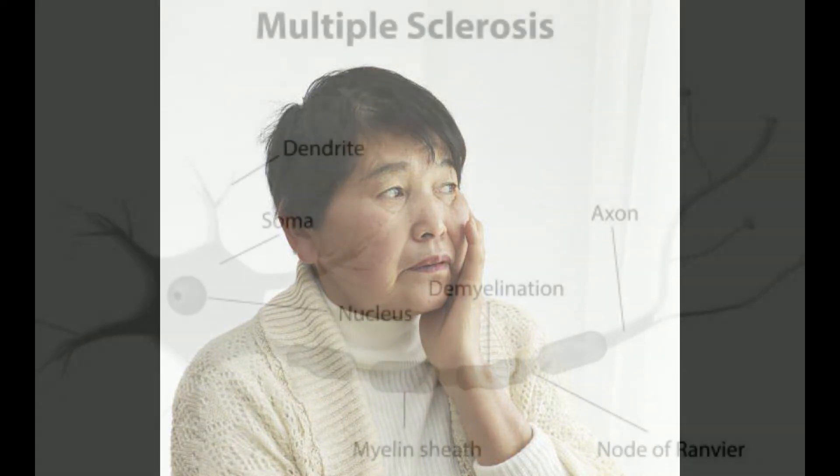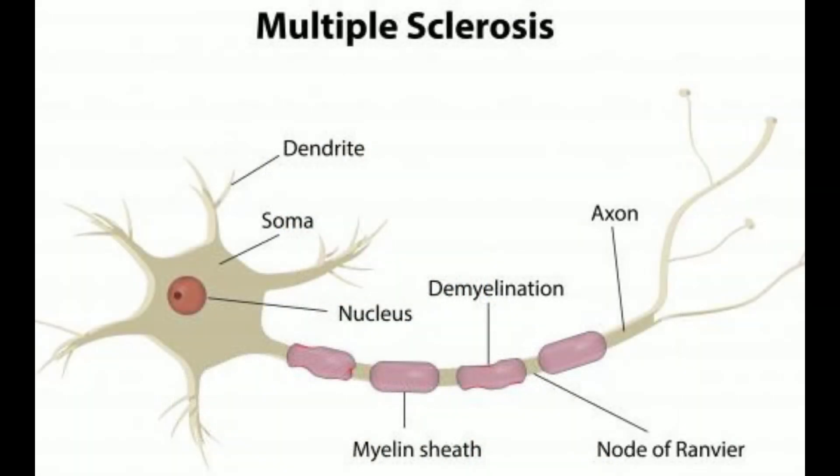Glial cells are the primary effectors of immune responses to injury within the brain. Astrocytes, also called astroglia, are a special form of glial cells found in both the brain and spinal cord. They support the functions of neurons in the central nervous system, especially by initiating the repair or scarring of the brain and spinal cord in response to traumatic injuries.